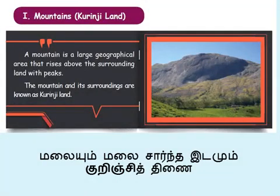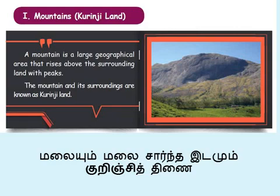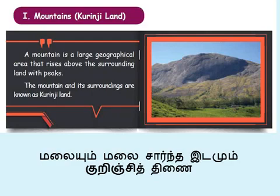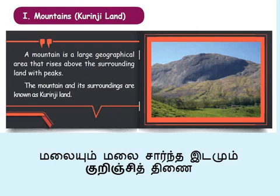Now we will see about the mountains, or the Kurinji land. A mountain is a large geographical area that rises above the surrounding land with peaks — it will be elevated above normal land with cone-shaped heights called peaks. The mountain and its surroundings are known as the Kurinji land.